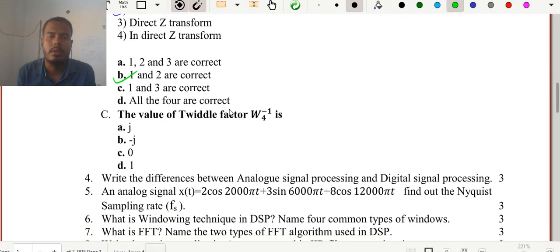The next question: the value of the twiddle factor W₄⁻¹. First of all, we have to draw this twiddle factor matrix. This is W₄⁰, then W₄¹, then W₄², then W₄³. So this will be how much? It is positive x-axis is 1, and this is negative x-axis, it is minus 1, then it is positive j, then this is imaginary, this is minus j.